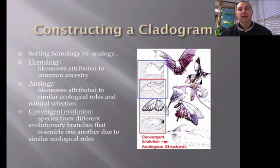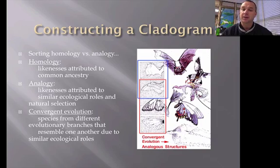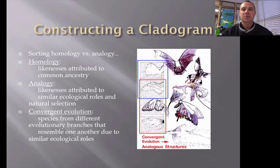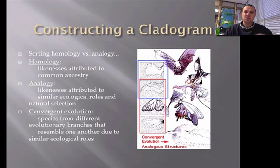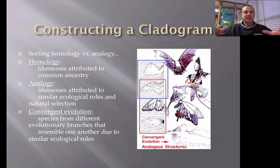When constructing cladograms, you have to sort through homologous and analogous structures. Analogous structures are not used for evolutionary evidence — a butterfly wing and a bird's wing look similar but don't mean the animals are related. Homologous structures show likenesses attributed to a common ancestor and are used as evidence. Convergent evolution is when organisms look similar because they share the same environment, such as desert animals tending to be brown, nocturnal, and water-conserving.